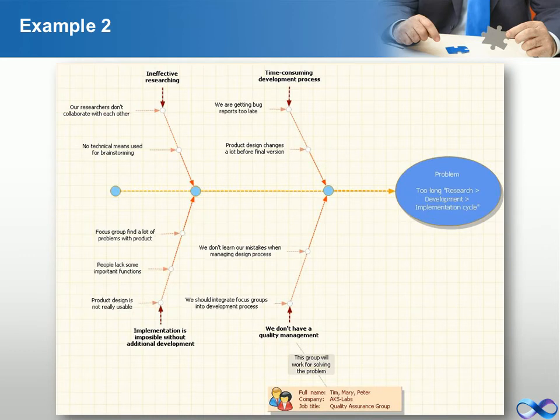This is a practical example of the use of cause and effect diagram to solve the problem of too long research, development, and implementation cycle.